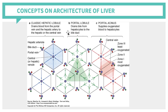Your classic hepatic lobule is polygonal in shape with the central vein at the center, surrounded by portal triads at the corners. Your portal lobule, on the other hand, has the portal triad at the center and is surrounded by central veins, forming a triangular shape. Blood flows from the portal triad outward in the portal lobule, while bile flows from the periphery to the center.